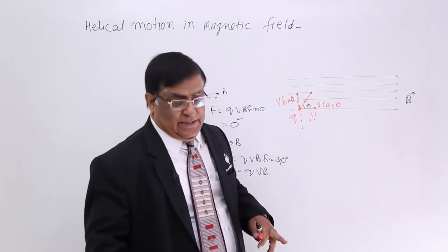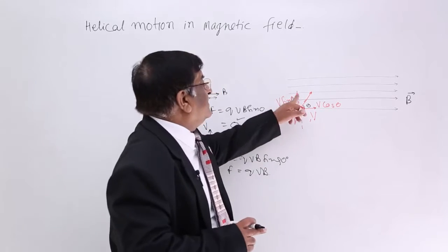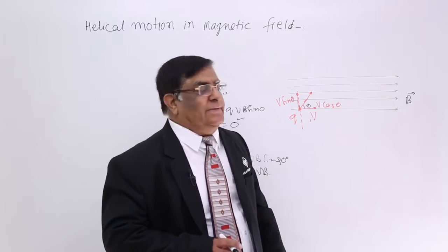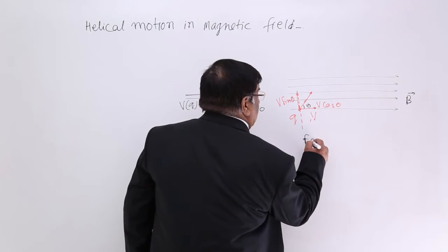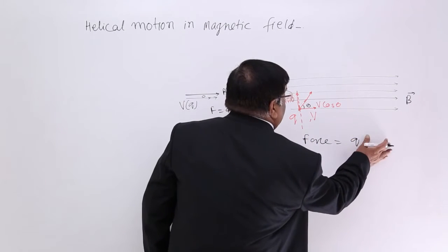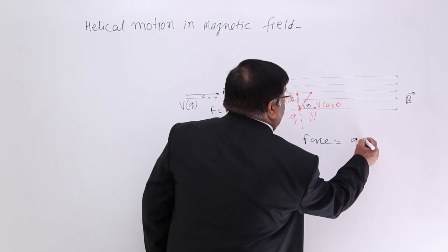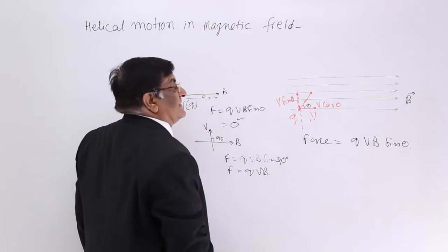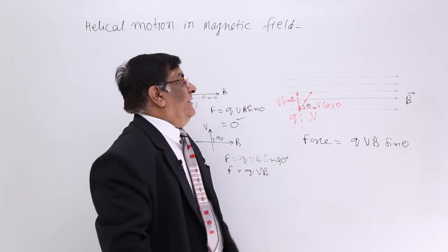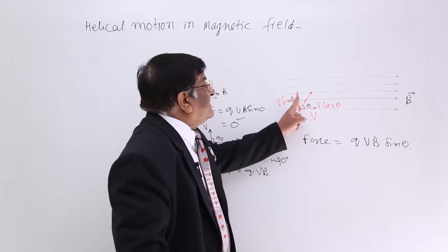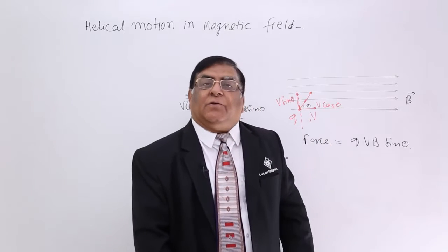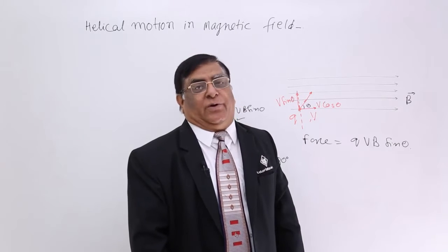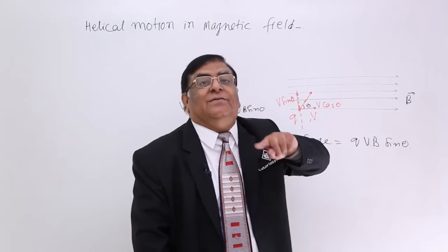What about V sin theta? V sin theta is perpendicular to magnetic field B. Therefore, a force will be acting on it. The force is Q into V sin theta into B. Because this component is perpendicular to B, what will be the shape of motion? It will make a circular motion encircling the magnetic field.